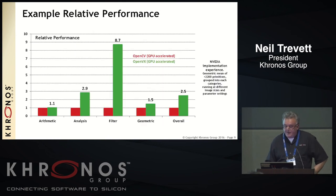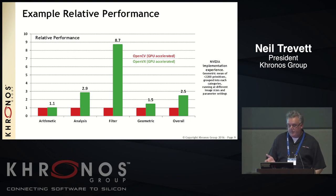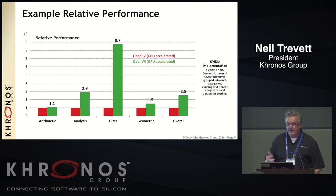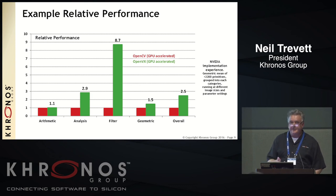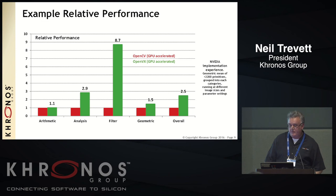This is NVIDIA essentially competing with itself, but it's interesting. Comparing OpenCV GPU-accelerated versus OpenVX GPU-accelerated, because of the higher level of optimization opportunity, we're beginning to find that this is actually coming true in reality. For some functions it doesn't make much difference, but for others it makes a lot of difference — we're finding two, three, four times speedup when good optimizations are achieved using OpenVX.